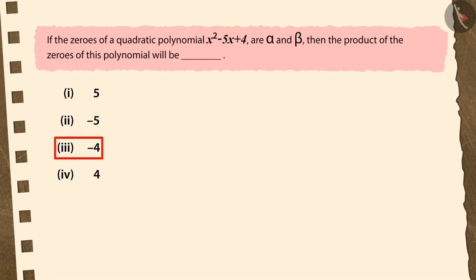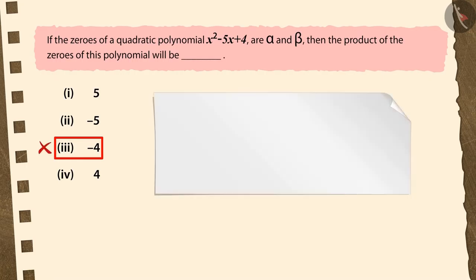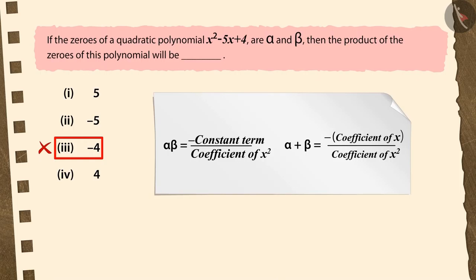If you have selected the third option, then too your selection is not correct. The reason for this is the use of a negative sign in the formula for the product of zeros.